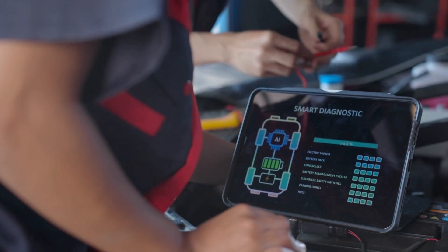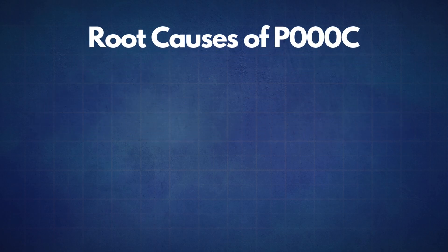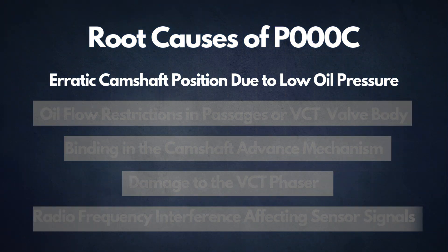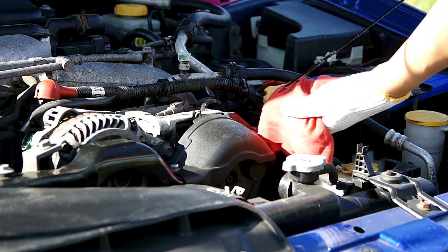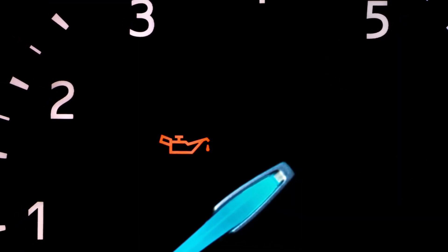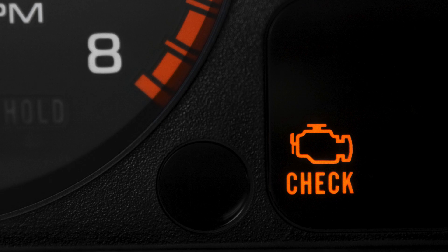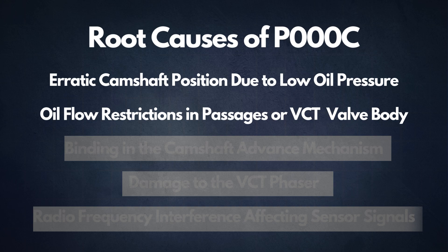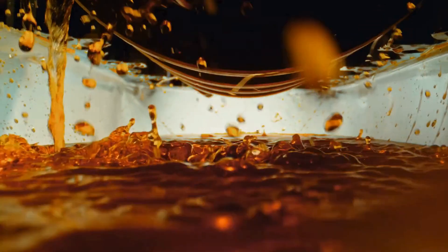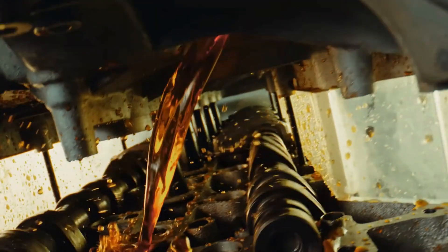If the P000C code reappears, it's time to look into some common root causes. The first cause is erratic camshaft position due to low oil pressure. Your camshaft's timing depends heavily on proper oil pressure — if the pressure is low, it can disrupt the camshaft's alignment, leading to the P000C code. The second cause is oil flow restrictions in passages or the VCT valve body, which can interfere with camshaft timing due to sludge buildup or blockages in the oil lines.